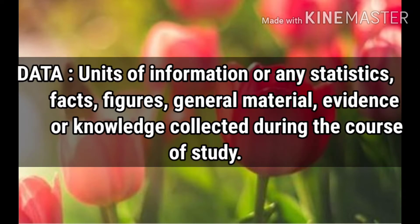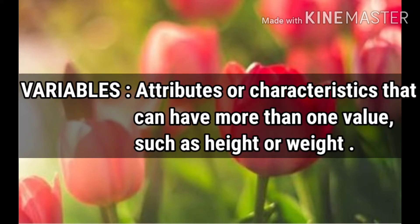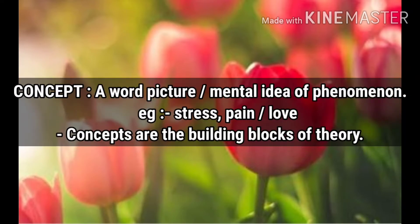Data is a unit of information — any statistics, facts, figures, general material, evidence, or knowledge collected during the course of a study. Variables are attributes or characteristics that can have more than one value, such as Height or Weight. Concept is a word, picture, or mental idea of a phenomenon — for example, Stress, Pain, or Love. Concepts are the building blocks of theory.